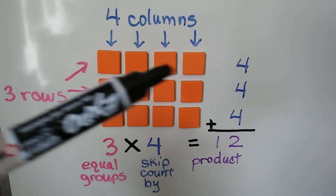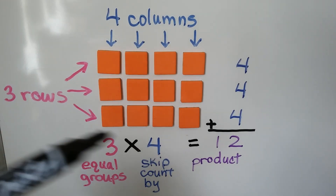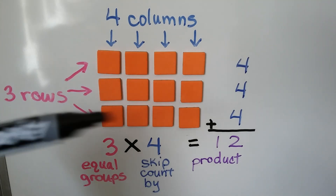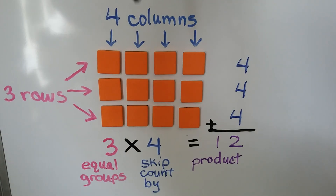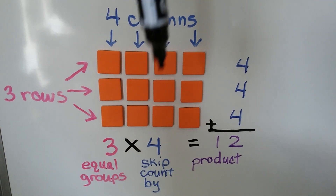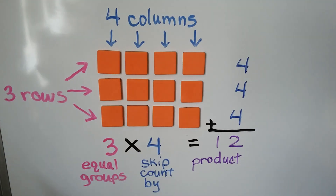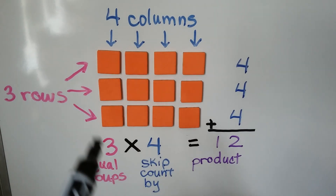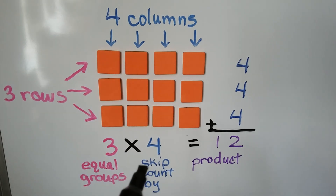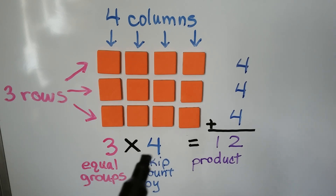In this array, we have three rows and four columns. The three rows are the three equal groups. The four columns are what we skip count by, so we would skip count by fours.